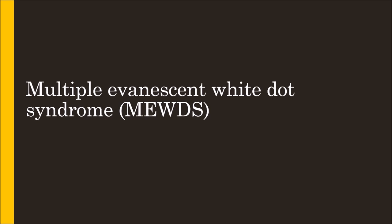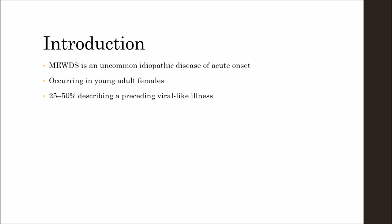We are starting with the white dot syndromes in our uveitis series, and the first syndrome we are going to discuss in this lecture is Multiple Evanescent White Dot Syndrome, or MEWDS. MEWDS is an uncommon idiopathic disease of acute onset, typically occurring in young adult females, with 20 to 50 percent describing a preceding viral-like illness.